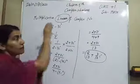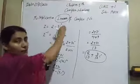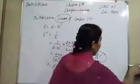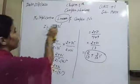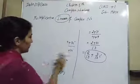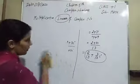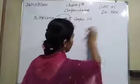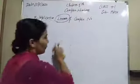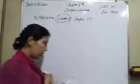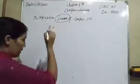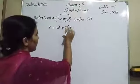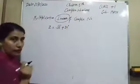Let us take one more example so that you can understand easily in which way we find the multiplicative inverse of a complex number. Now one more question: z is equal to root 5 plus 3 eta. Again we have to find its multiplicative inverse.